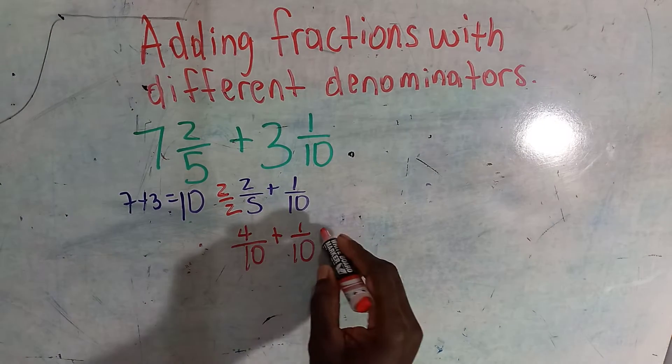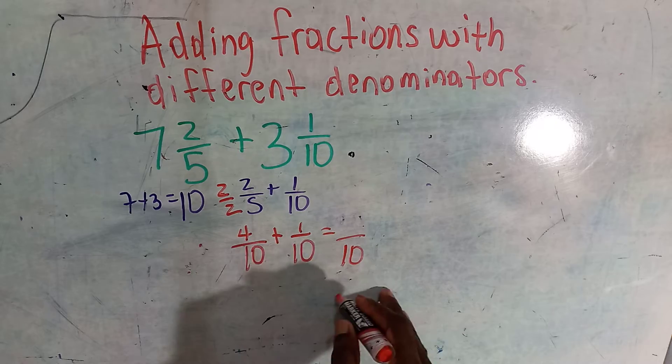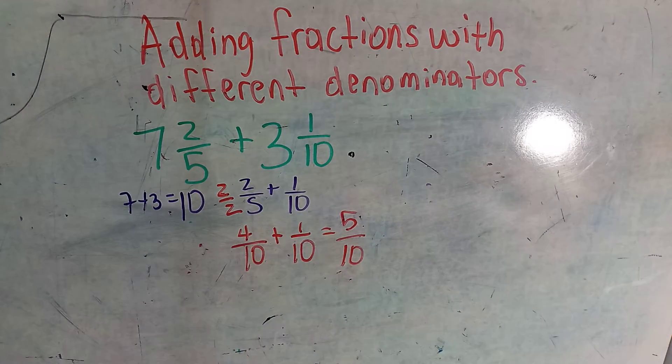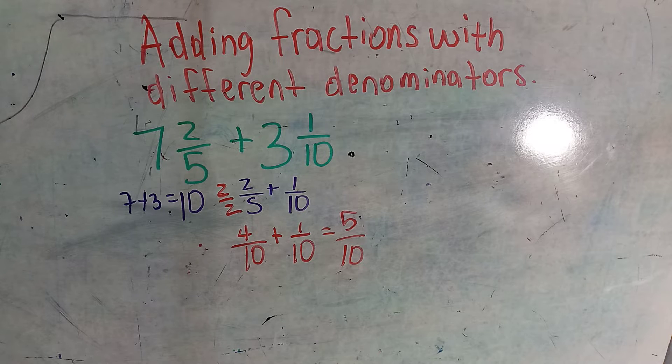Now we have one over ten. All we need to do is put back the ten right there, and then we add both numerators. And this can be further reduced to one over two, to a half.